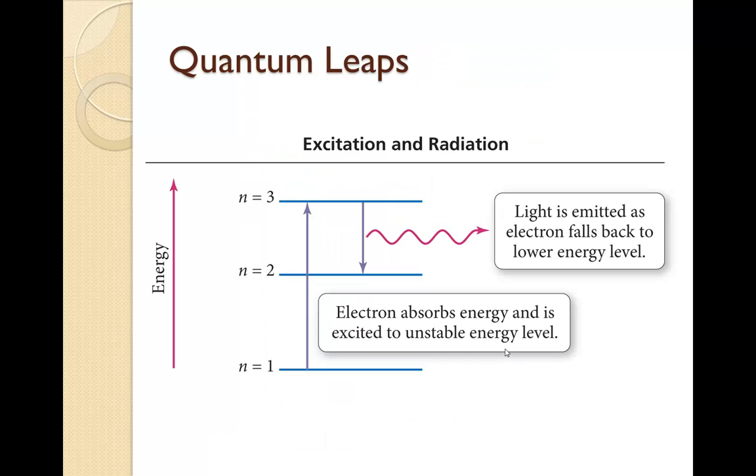These are called quantum leaps. And it's all about exciting the electron and then radiating it off. So the electron absorbs the energy and is excited to an unstable energy level. Then light is emitted as the electron falls back down to the lower energy level.